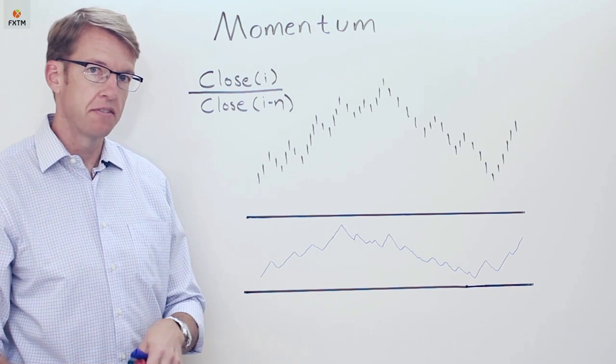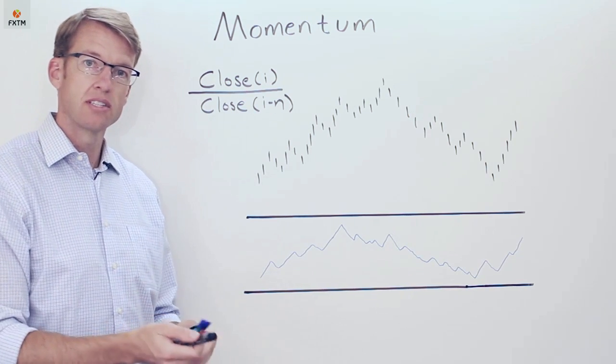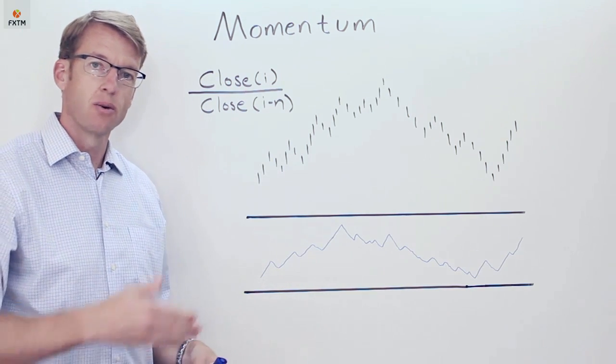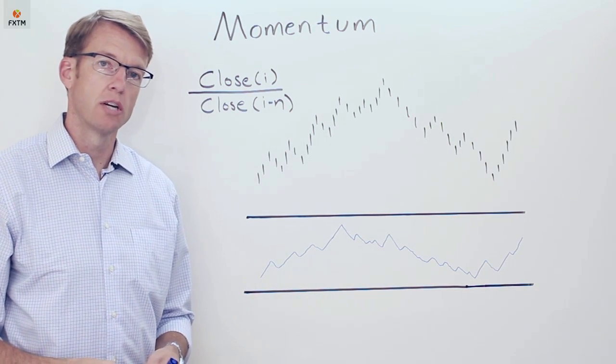So obviously if the price is continuing to accelerate beyond the close price of 14 periods ago then we're going to see a momentum oscillator that is going higher. Now if the opposite were true then the momentum oscillator would generally be falling.